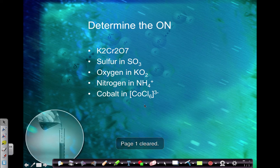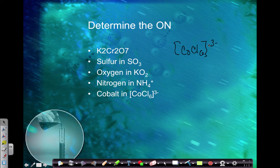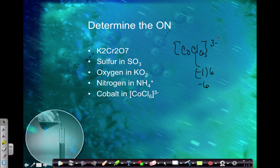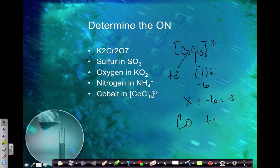Let's look at cobalt in a compound with Cl6 and a minus three charge. Overall the oxidation numbers need to add up to negative three. Chlorine is in group 7A, and since it's a binary ionic compound, chlorine's oxidation number is negative one. There are six of those, so that's negative six. What plus negative six gives negative three? That's positive three. Since there's only one cobalt, cobalt's oxidation number is positive three.